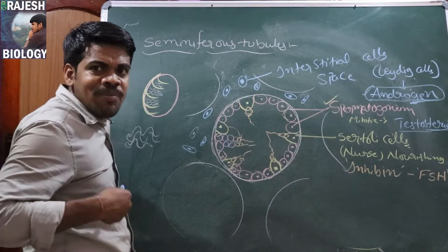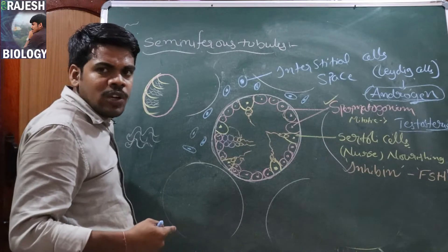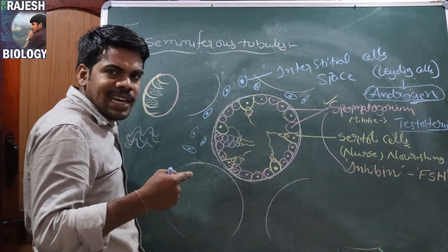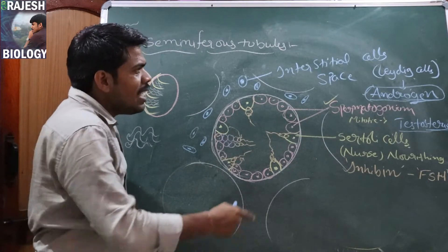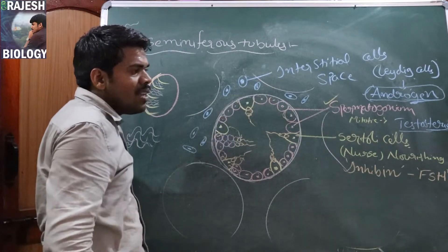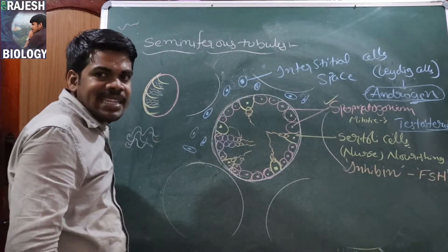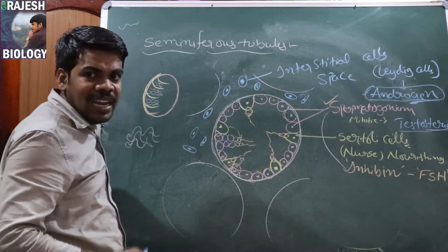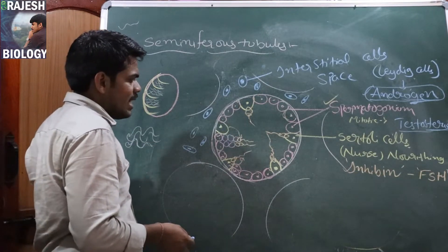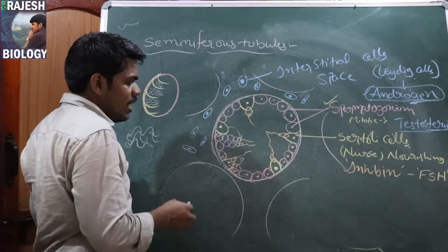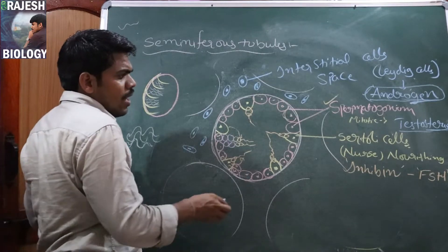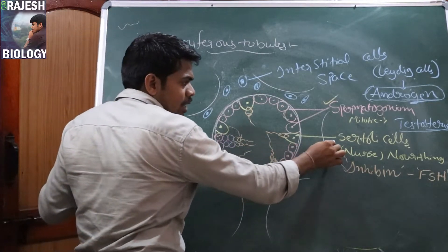So interstitial cells — also called Leydig cells — release androgens. They are called Leydig cells because they lead the male characters.